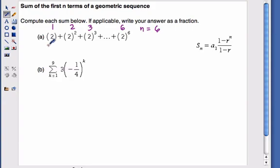And the value of my a sub one term is this value right here. This is a sub one. And my r value, I can see I'm multiplying each of these by two to get to the next value. That's the value that I'm raising to the exponent. So r is going to be two.